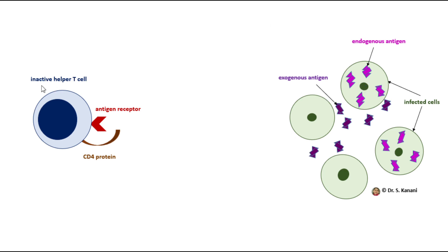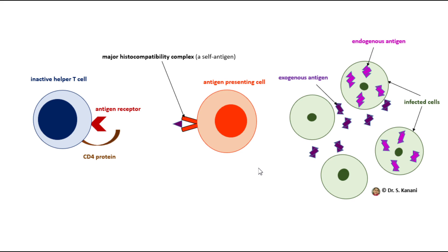This inactive helper T-cell is sitting in secondary lymphatic organs and tissues — lymph nodes, spleen, and lymphatic nodules. It has an antigen receptor. However, T-cells cannot use their antigen receptors to bind to the antigen of the microbe directly, so we always need a third party, which is called an antigen-presenting cell.